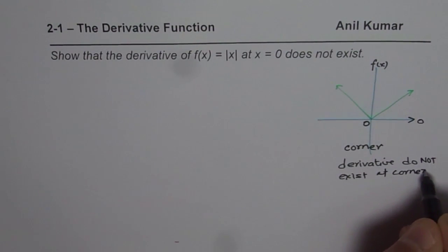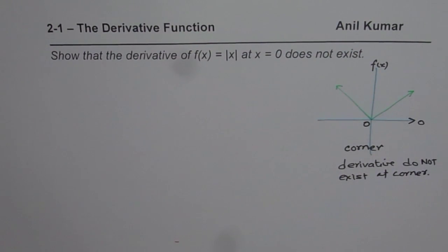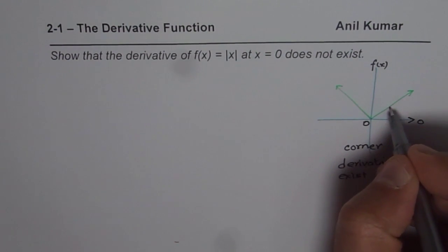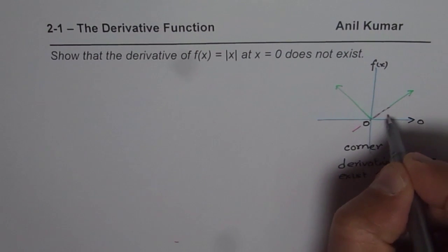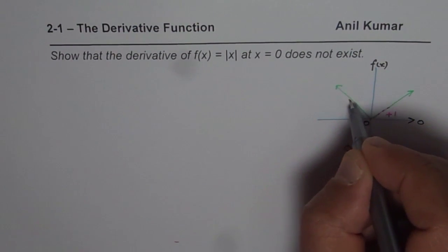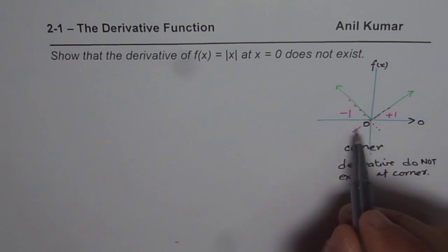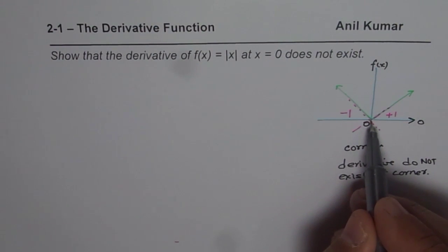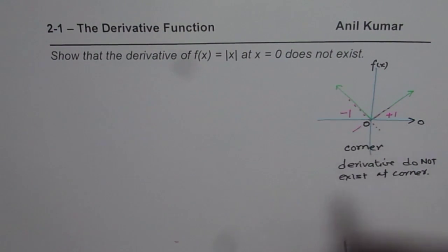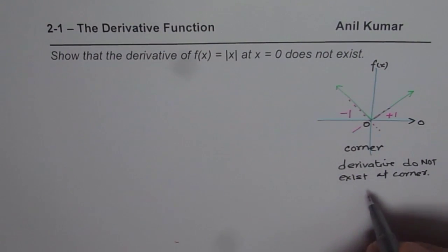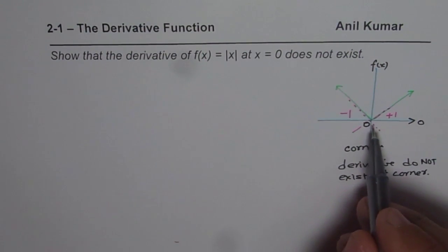Now it is the time to prove it also. As you can see, if I start making tangents — if I am approaching from the right side, then the tangent slope is plus 1. But if I am approaching from the left side, the slope of the tangent is minus 1. Now since this slope is not the same as we approach 0 from both sides, we say that the derivative is not existing, or it is not differentiable at 0.